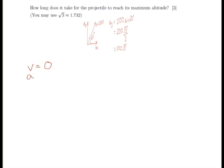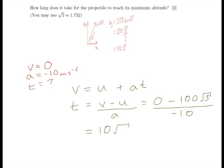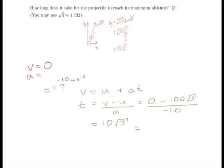We're interested in the vertical component when the velocity is 0 — that is, how long it takes to reach a velocity of 0. We know that the acceleration due to gravity is minus 10 metres per second squared. We need to select a SUVAT equation to find time: v equals u plus at, rearranged to t equals v minus u divided by a. That gives us 0 minus 100 root 3, divided by minus 10, which equals 10 root 3, approximately 17.3 seconds.